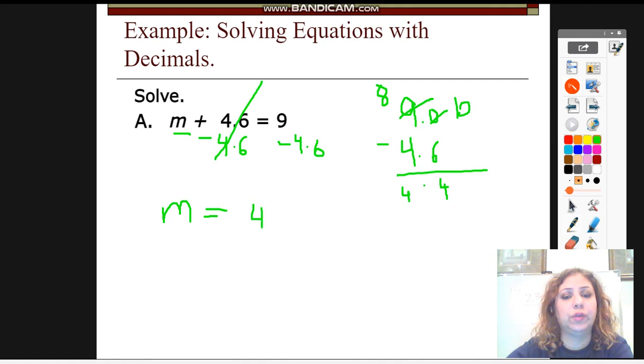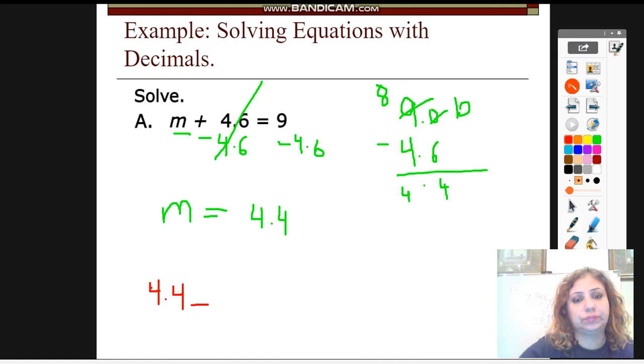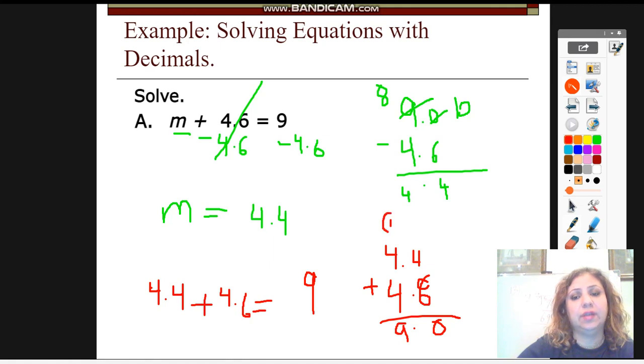So m is equal to 4.4. To check my answer, you can replace or substitute the 4.4 with the m and see if the answer is going to be 9. So if you put 4.4 instead of the m, 4.4 plus 4.6, it will definitely give you 9. If you line them up on top of each other, you will find that it's going to be 9. So my solution is correct. It is 9, exactly 9. So my answer is correct.